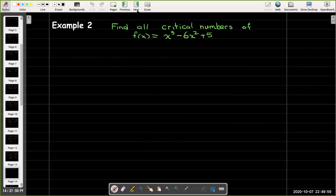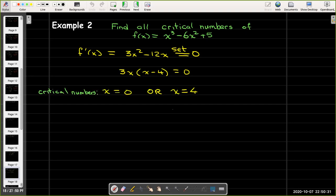In the next example, we'd like to find all critical numbers of the polynomial f of x equals x cubed minus 6x squared plus 5. The derivative is just 3x squared minus 12x. I'll set that equal to zero, and I can solve that by factoring. And I'll get two critical numbers, x equals zero or x equals 4.